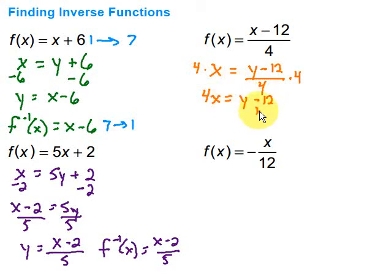So now I have 4x equals y minus 12. Then go ahead and get rid of that minus 12. Do the opposite of course. So we have 4x plus 12 equals y. And finally write it in function notation. So the f inverse of x is equal to 4x plus 12.